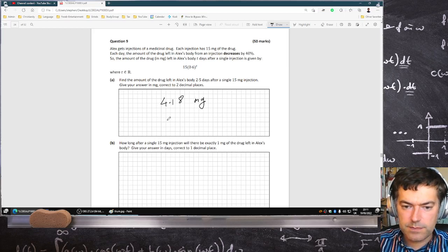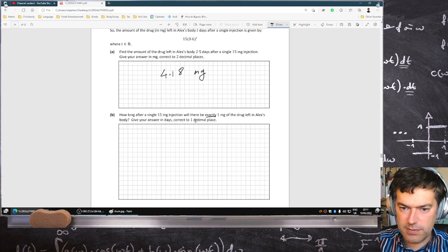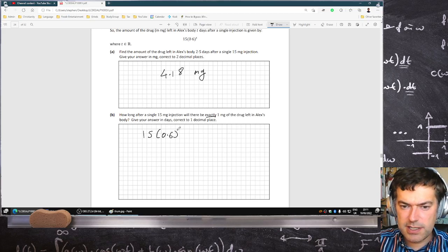How long after a 15 milligram injection will there be exactly one milligram drug left in Alex's body? Give your answer in days correct to one decimal place. Well, you can't be exact if it's one decimal place, but whatever. 15 times 0.6 power t needs to equal 1. So I divide by 15 and I'll put a natural log on both sides.